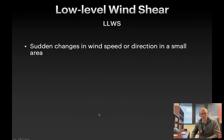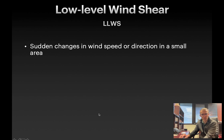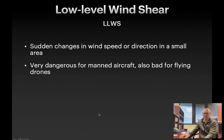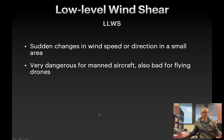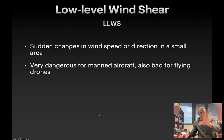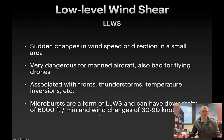There's a particular type of wind called low-level wind shear, which is a sudden change in wind speed or direction in a small area. It's typically associated with fronts and storms, and it's very dangerous for manned aircraft. It can also be dangerous for UAVs because you don't want your drone suddenly slammed into the ground or taken far up into the air. Microbursts are a form of low-level wind shear — they're like a cloudburst where rain dumps down in a small area from a rain cloud, and they are very dangerous for aircraft.